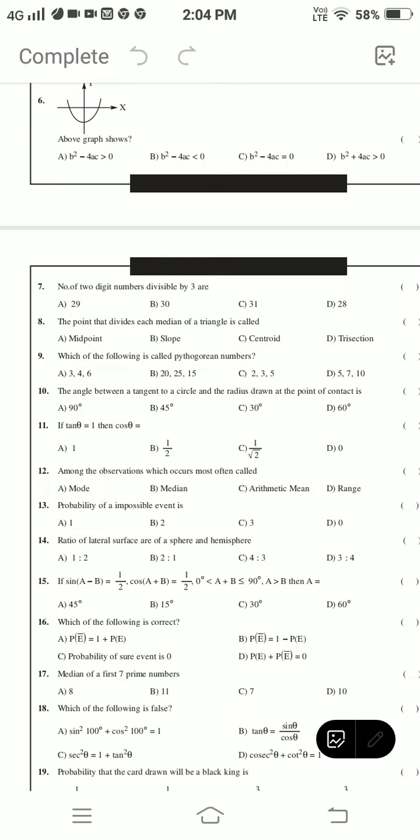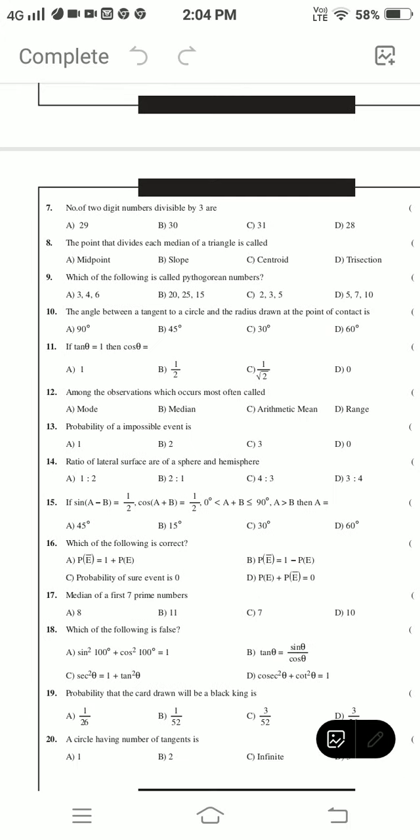If sin(A - B) = 1/2, cos(A + B) = 1/2, 0 < A + B ≤ 90°, A > B, then A equals? Which of the following is correct? Median of the first seven prime numbers? Which of the following holds? Probability that a card drawn will be black king in a circular ring?